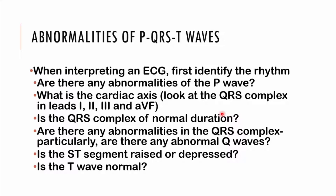Then we look at the QRS complex and ask ourselves if it's of normal duration — 1, 2, 3 small squares. Are there any abnormalities, in particular any abnormal Q waves? We'll look at the ST segment and ask: is it raised or is it depressed? We'll look at the T waves and ask: are they normal, are they peaked, or are they inverted?